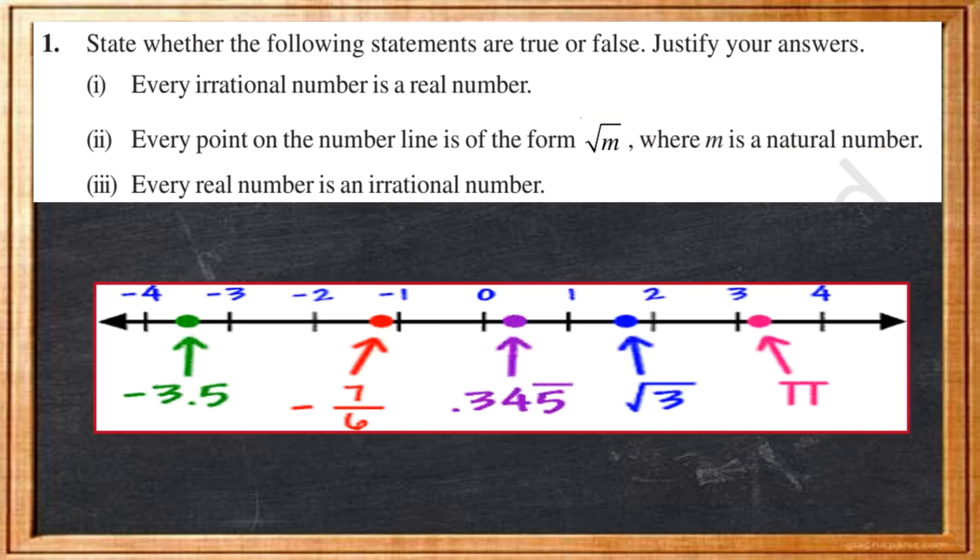Our third statement says, every real number is an irrational number. Let us take number 4. If we take root of number 4, it will give us 2. So, 4 is a rational number, it is not an irrational number. So, we can say that every real number is not an irrational number.